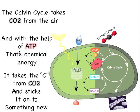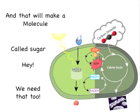The Calvin cycle takes CO2 from the air. And with the help of ATP, that's chemical energy. It takes a C from CO2 and sticks it on to something new. That will make a molecule called sugar. Hey, we need that too.